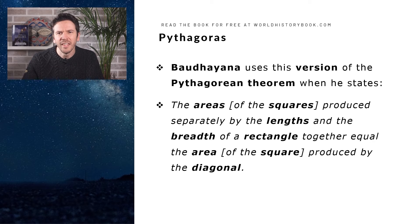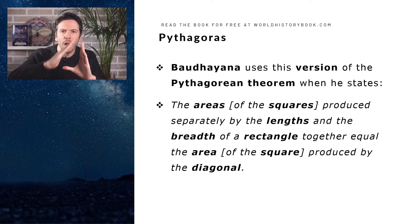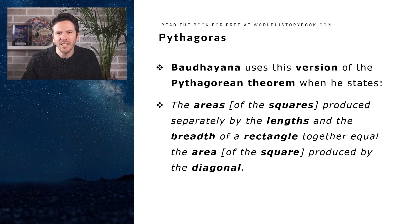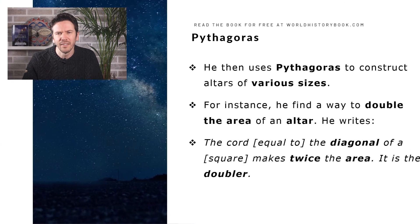Bodhayana also used this version of the theorem. He stated, quote, the areas of the squares produced separately by the length and the breadth of the triangle together equal the area of the square produced by the hypotenuse or the diagonal. And there you have it in a 7th century BC text, the Pythagorean theorem.